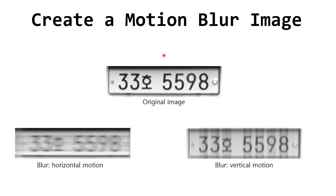In this video we will learn how to create a motion blur image in frequency domain using Python. A motion blur image usually occurs when we take a picture using a camera but cannot hold the camera still, resulting in a blur image as shown in this slide.